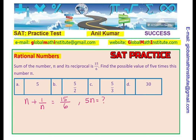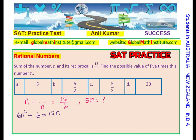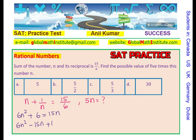Strategy one: we have an equation, we can make it into a quadratic equation and solve for n. I can multiply all the terms by 6n, so I get 6n squared plus 6 equals 15n. We have multiplied each and every term by the common denominator, which is 6n. Now bring them together: 6n squared minus 15n plus 6 equals 0. That is the quadratic equation to be solved — you can use the quadratic formula or factor it.